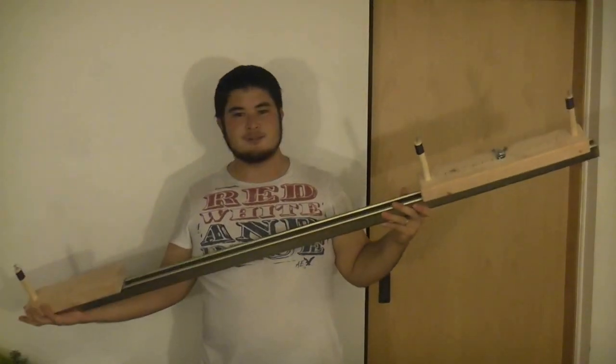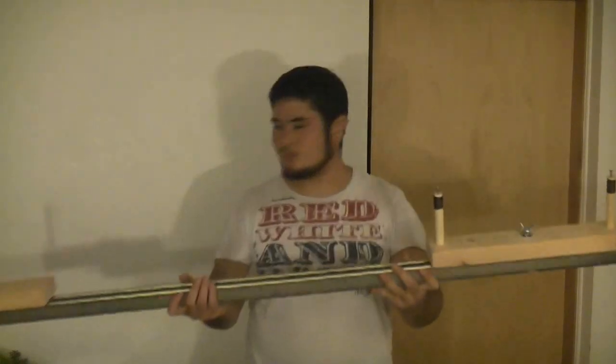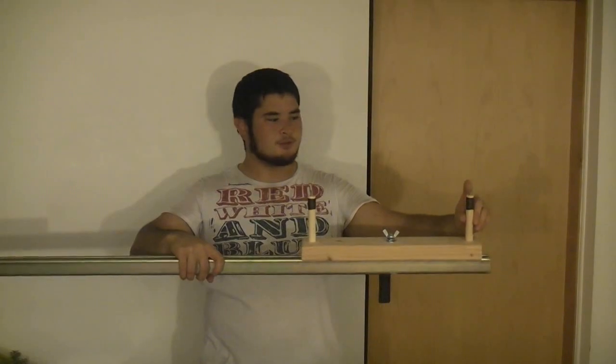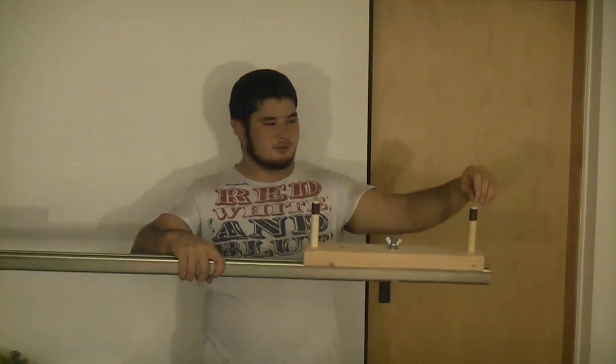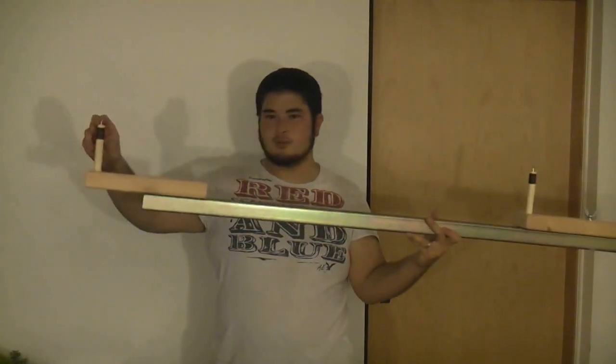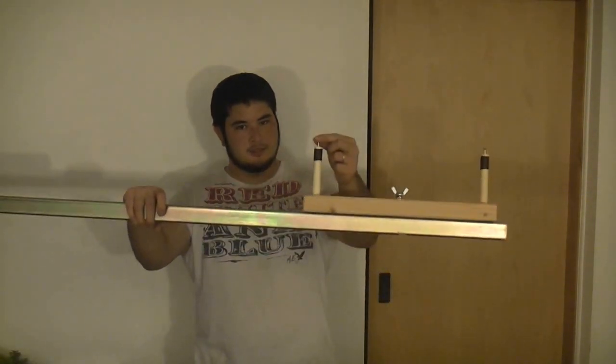Here's the finished stringing jig. The way it works is basically when you're making your string, you tie your loop, or the start of your loop here. You loop it around from that post all the way to this post and back, however many strands you want, or how many times you want it to loop over.